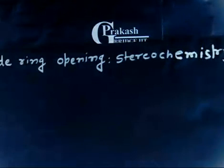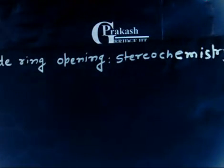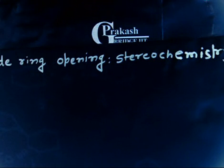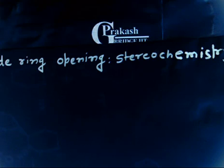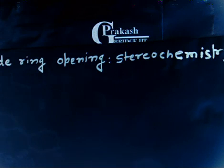Let's discuss this problem. This is a quite good problem. It says: Propylene Oxide is a chiral molecule. Hydrolysis of Propylene Oxide gives Propylene Glycol, another chiral molecule. Draw the enantiomer of Propylene Oxide.